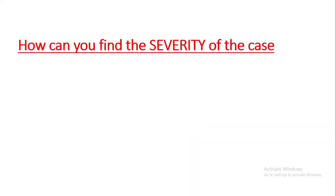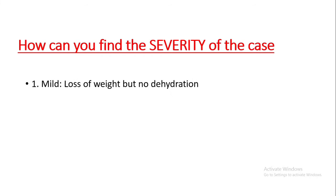Next, how can you find the severity of the case — whether it can be treated by home management or needs hospitalization and immediate treatment? According to the severity, we divide hyperemesis gravidarum into three types: mild, moderate, and severe. The condition is said to be mild when there is loss of weight but no dehydration.